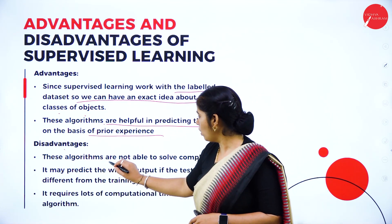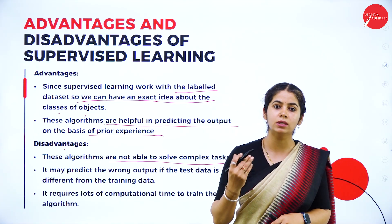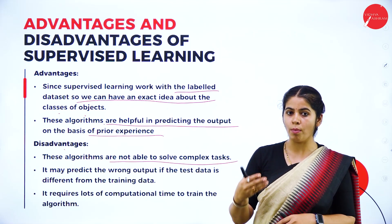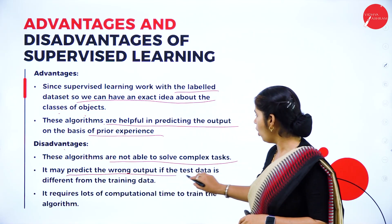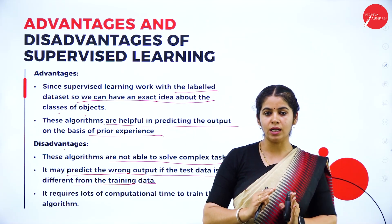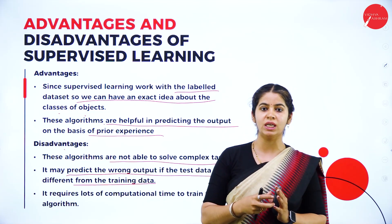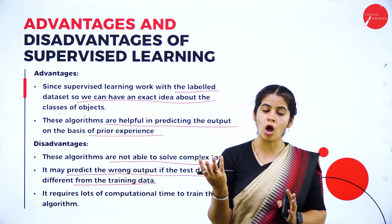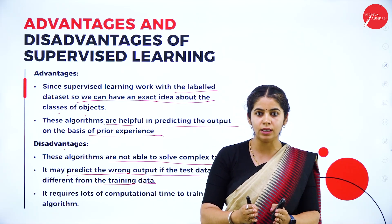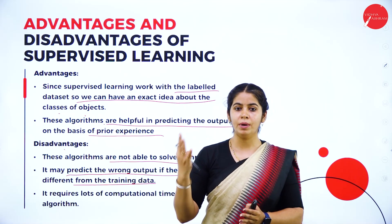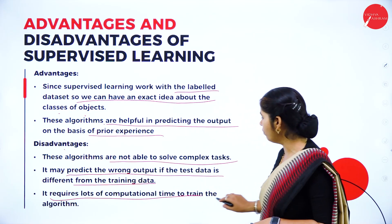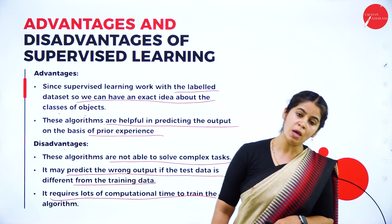Disadvantages: these algorithms are not able to solve complex tasks because we categorize it as yes or no, so other real-world problems cannot be properly put into supervised machine learning. It may predict the wrong output if the data set differs from the training data set — for example, if I give a picture of a lion instead of a cat, the machine can predict the wrong output because the machine was trained for cats and dogs, not for lions or tigers. It requires a lot of computational time to train the algorithm.